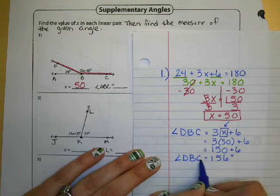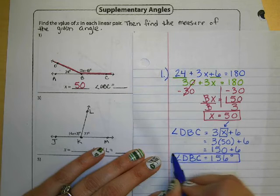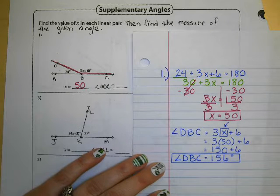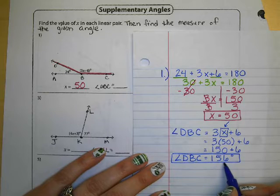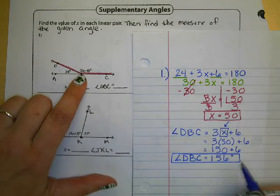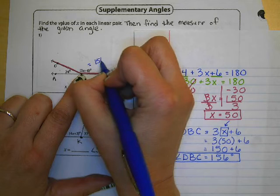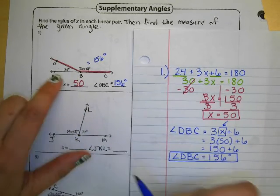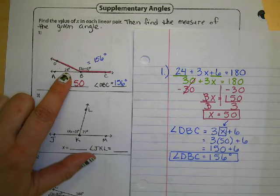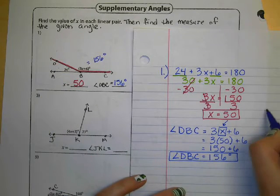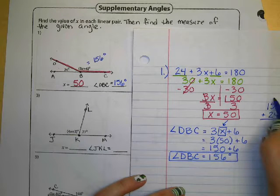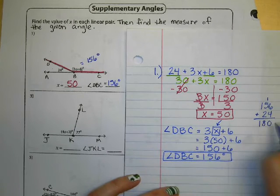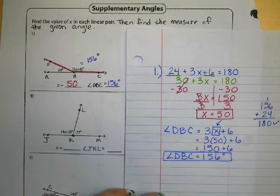Angle DBC is equal to 156 degrees. Just like on the other problems, we want to check our work. We take 156 — because we found this was equal to 156 degrees — and if we add 24 to it, it should equal 180 degrees. 156 degrees plus 24 is 180 degrees, just like it should be. So our work checked out.